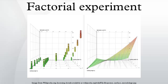In statistics, a full factorial experiment is an experiment whose design consists of two or more factors, each with discrete possible values or levels, and whose experimental units take on all possible combinations of these levels across all such factors.